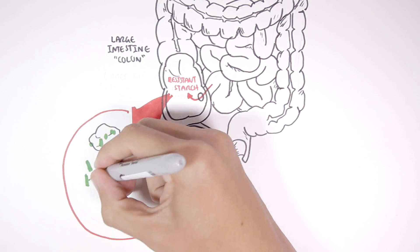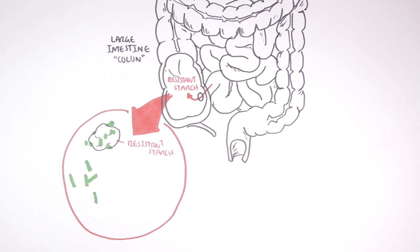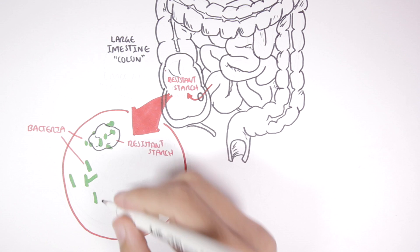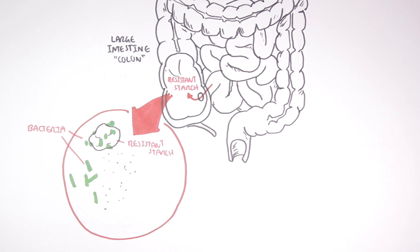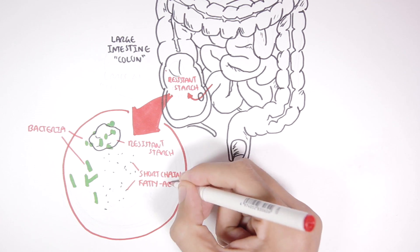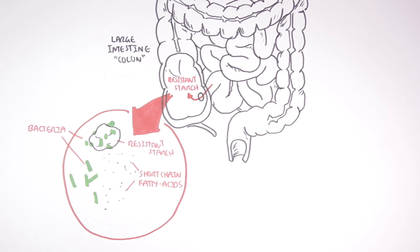the resistant starch will undergo fermentation by the trillions of bacteria that live there. Through fermentation, the bacteria produce substances,